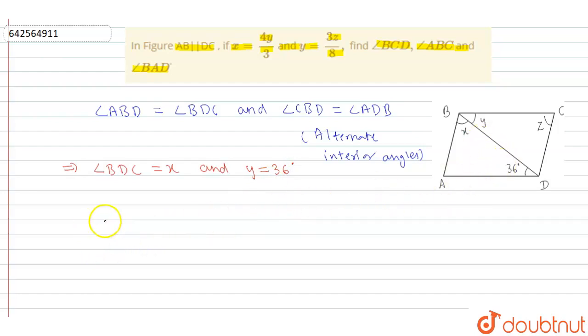So, but we can write, but it is given that x is equal to 4y upon 3, okay, and y is equal to 3z upon 8. Okay, so from here we can solve and find the value of x and z.